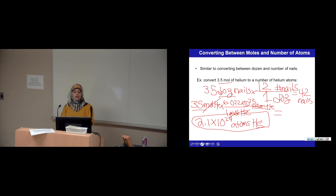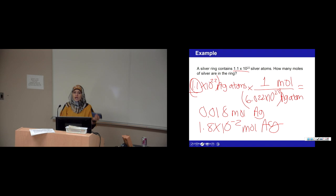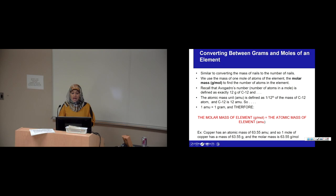Notice it doesn't matter what you're dealing with. When going from dozens to the number of things in the dozen, it's always 12 — one dozen of trucks equals 12, one dozen of donuts equals 12. Same with moles: whether it's silver atoms or helium atoms, it's still 6.022 times 10 to the 23rd things in one mole. Go ahead and do this checkpoint in class.